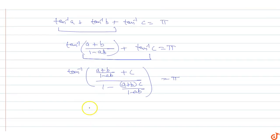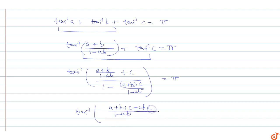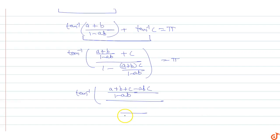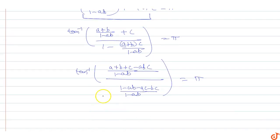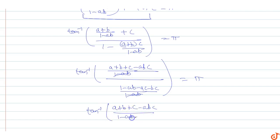So taking tan inverse of this, the numerator is (a + b + c minus abc) upon (1 minus ab), and the denominator becomes (1 minus ab minus ac minus bc), which equals pi. The (1 minus ab) cancels out, so we get tan inverse of (a + b + c minus abc) upon (1 minus ab minus ac minus bc) equals pi.